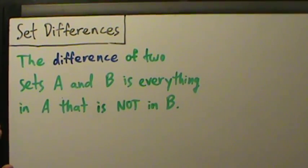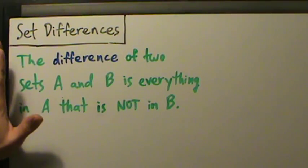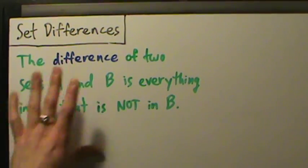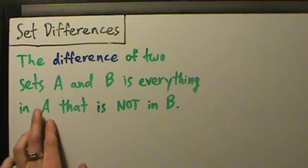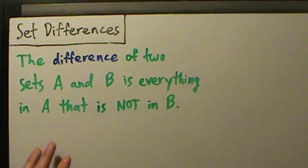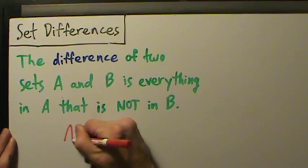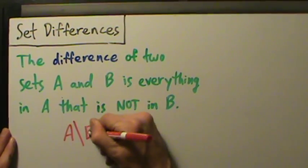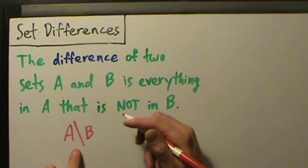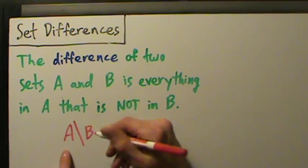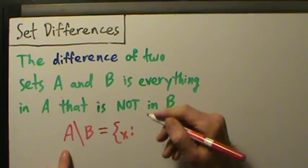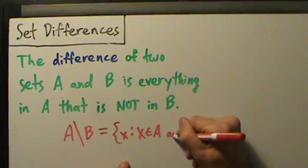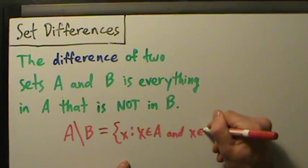We've talked a little bit about unions and intersections, so now let's talk about another set operation called the difference of sets. The difference of two sets A and B is everything that is in A that is not in B. We denote that as A backslash B, read as 'A without B' or 'A minus B', and that's the set of all X such that X is in A and X is not in B.